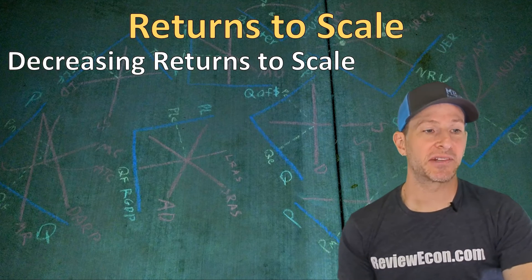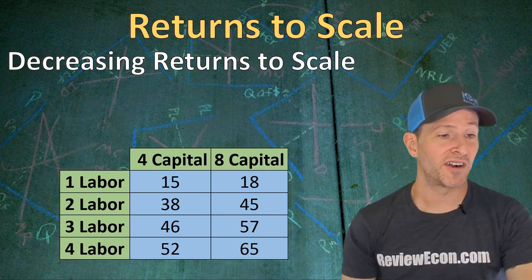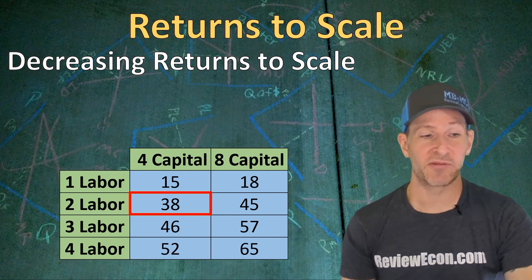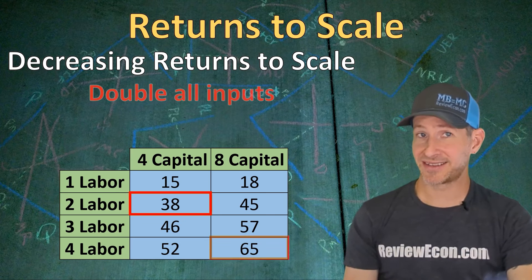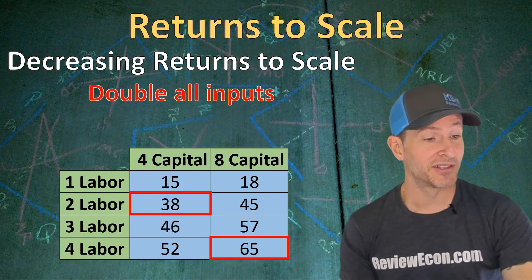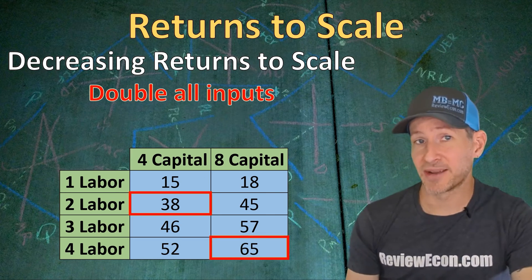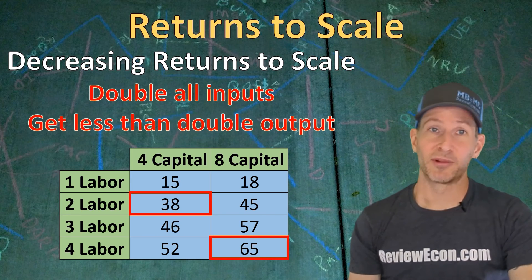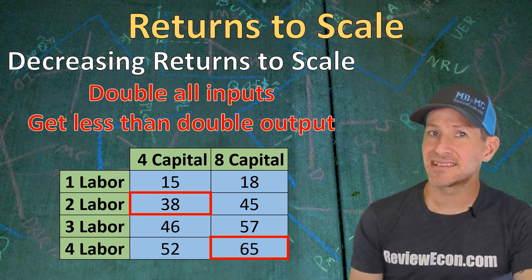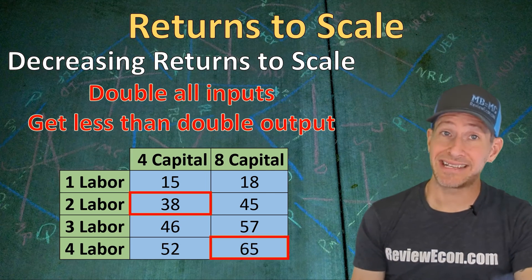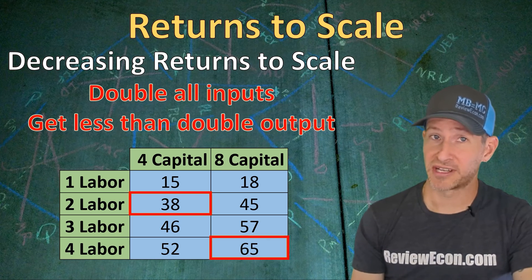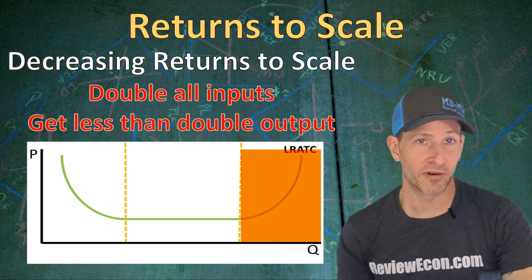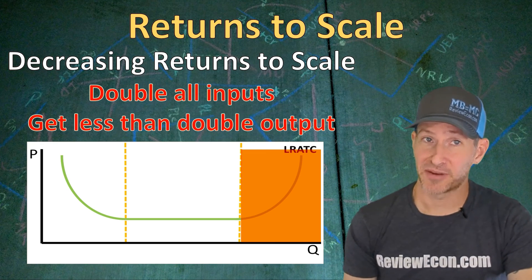Finally, we could see decreasing returns to scale. If this firm uses four units of capital and two units of labor, they will produce 38 units of output. If we double both inputs — moving to four units of labor and eight units of physical capital — we see 65 units produced. This time, doubling all the inputs gave us less than double the output. Scaling up production has decreased our rate of return for those inputs. On the long run average total cost curve, we see that as the upward sloping portion, and we call that diseconomies of scale.